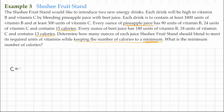For every ounce of pineapple juice, it generates 15 calories. The 13 calories are generated from the beet juice, so if we think of the beet juice as Y, we write that as 13Y. So our objective function for the minimization is C = 15X + 13Y, where X is the pineapple juice and Y is the beet juice.